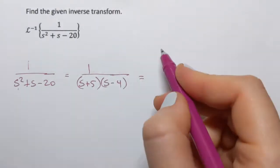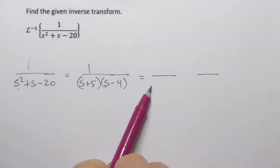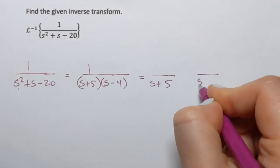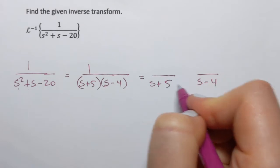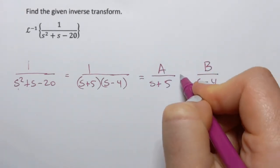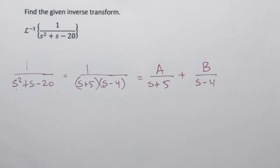Next, I decompose this expression into two fractions. Each will have one of the factors from the denominator, so s plus 5, s minus 4. And then since these are linear factors, I'm going to use a and b in the numerators.